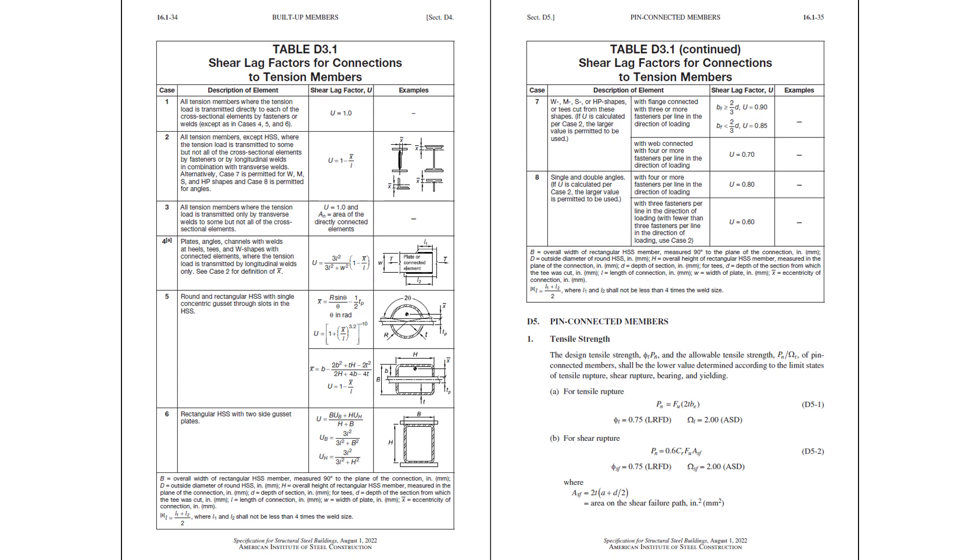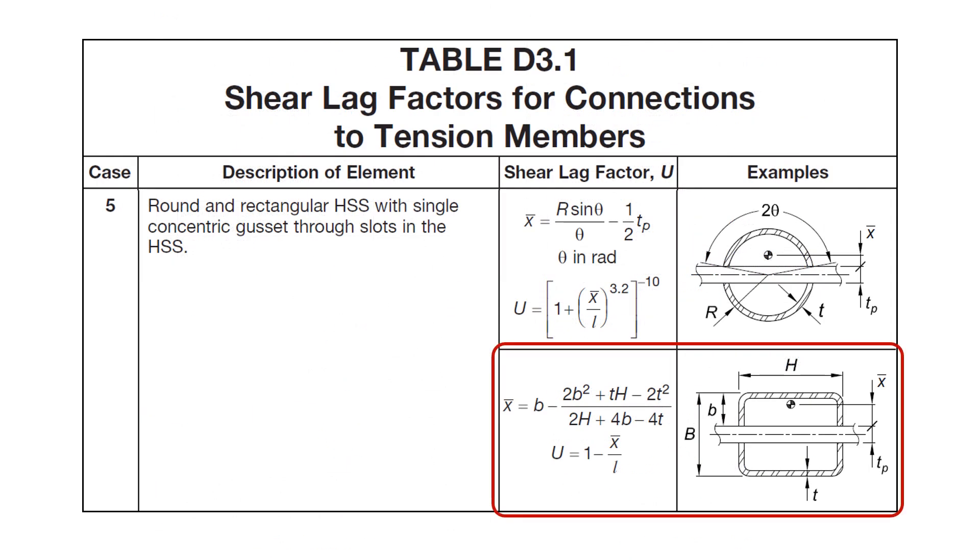Next, we'll refer to table D3.1 of the AISC specification, and we find that case 5 of that table applies to our situation where we have a rectangular HSS with a concentric gusset plate. Zooming in a little more closely, we can see that U is taken as 1 minus X-bar over L, where X-bar is the distance from the face of the concentric gusset to the centroid of half of the section that remains after cutting the slot for the gusset plate. Note that this is a new provision in the 2022 edition of the AISC specification. Older editions of the specification included a slightly different equation for the shear lag reduction coefficient for this case.